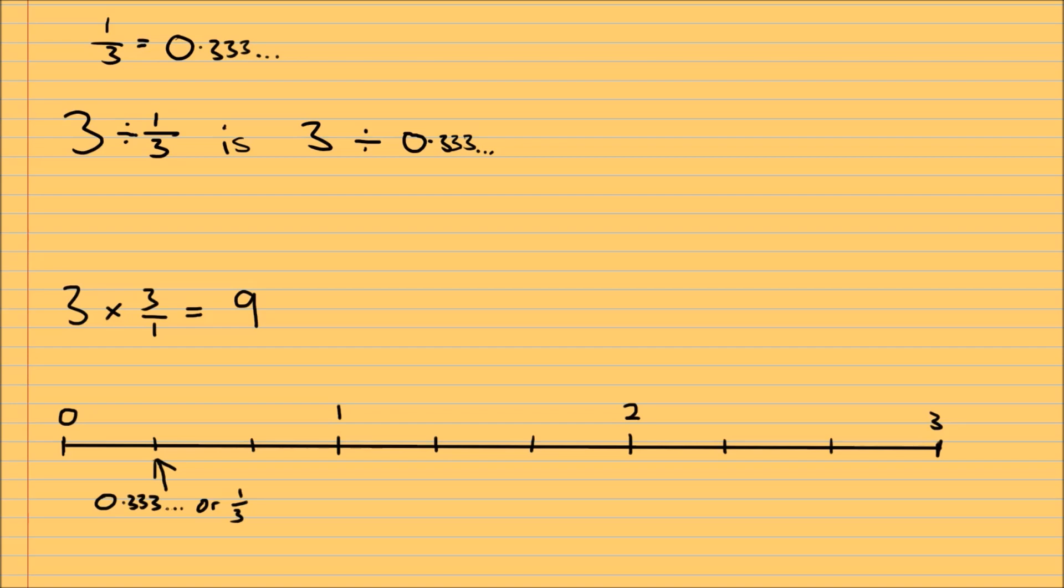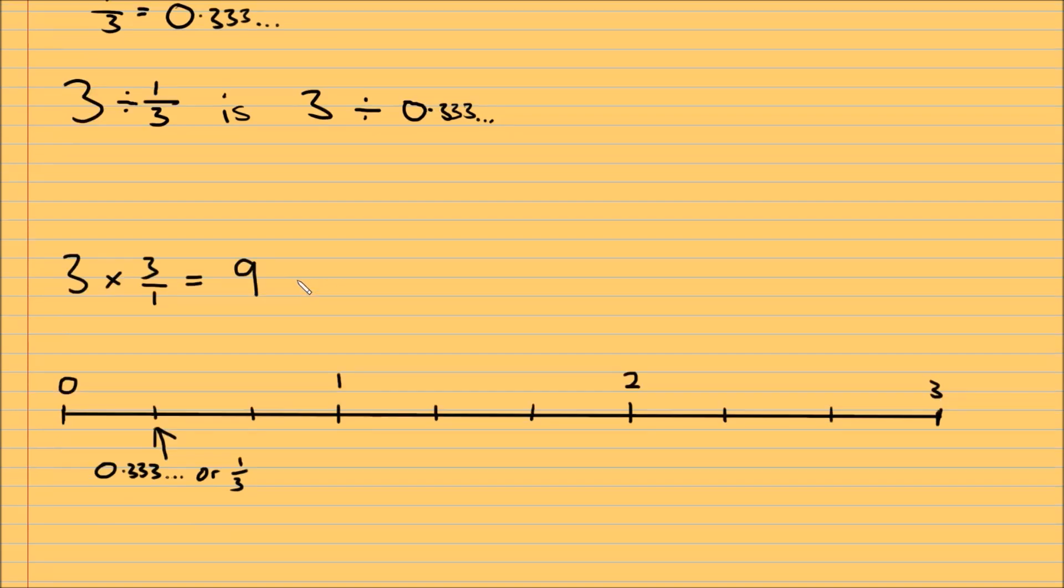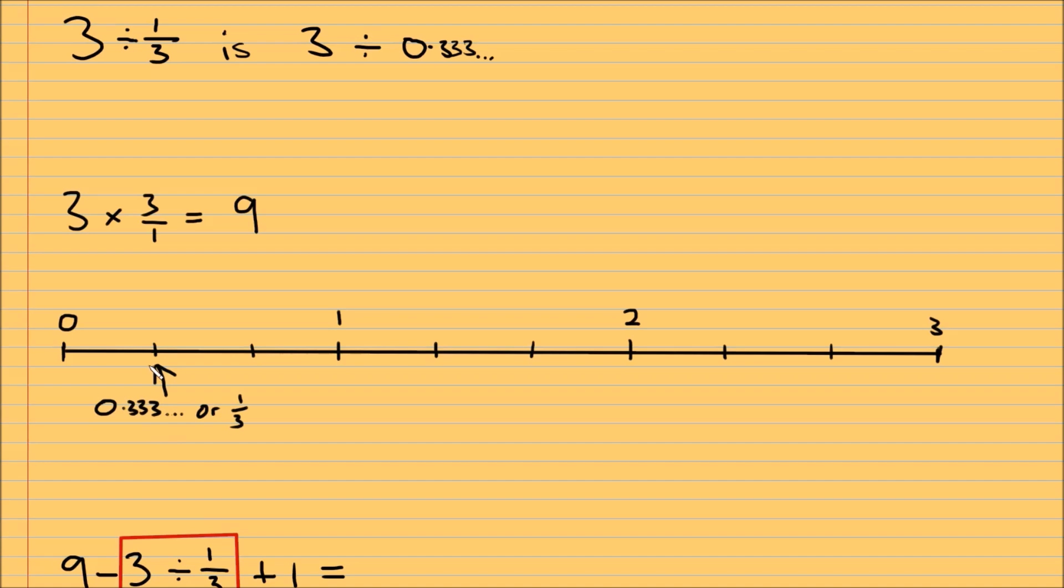Also, just to back this up, if you want to think about it from a visual perspective, I've got a number line here which goes from 0, 1, 2, 3, and I've pinpointed a third, or 0.3 recurring. Because I know some people have trouble dividing by fractions, we're saying 3 divided by a third, or 0.3 recurring, which means how many of these fit into 3, and we can just count it.